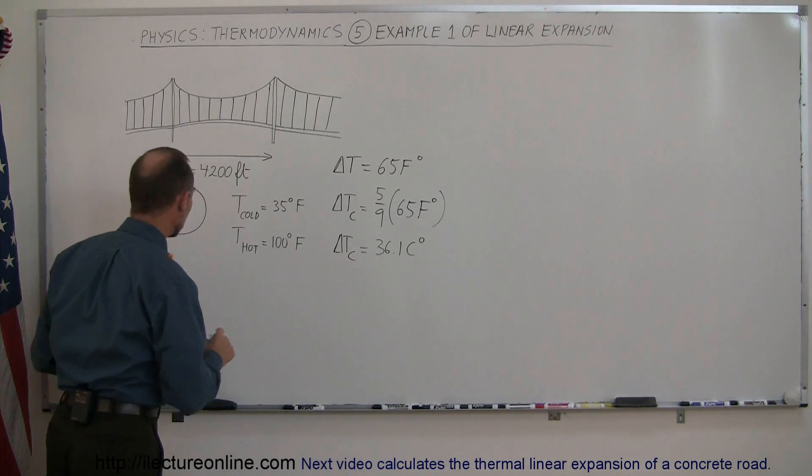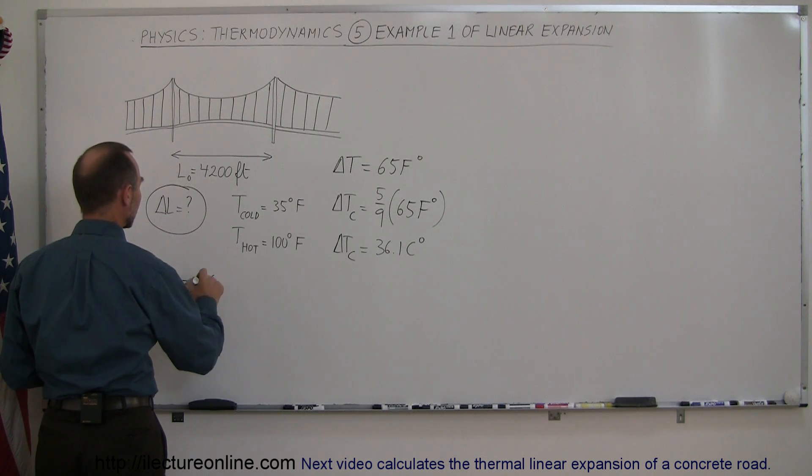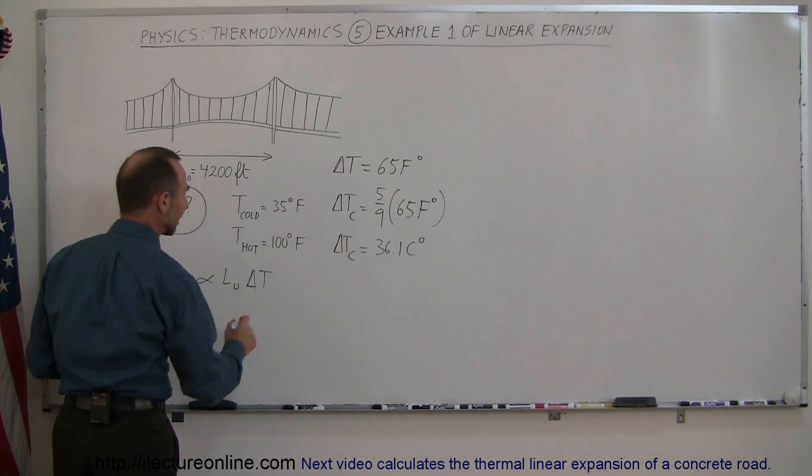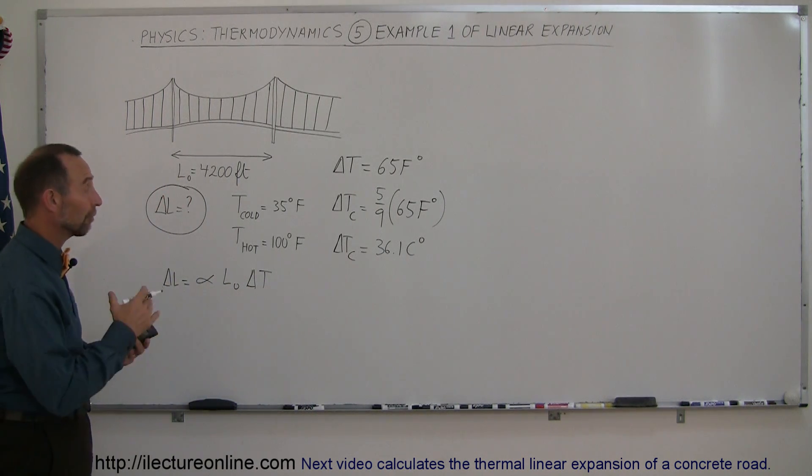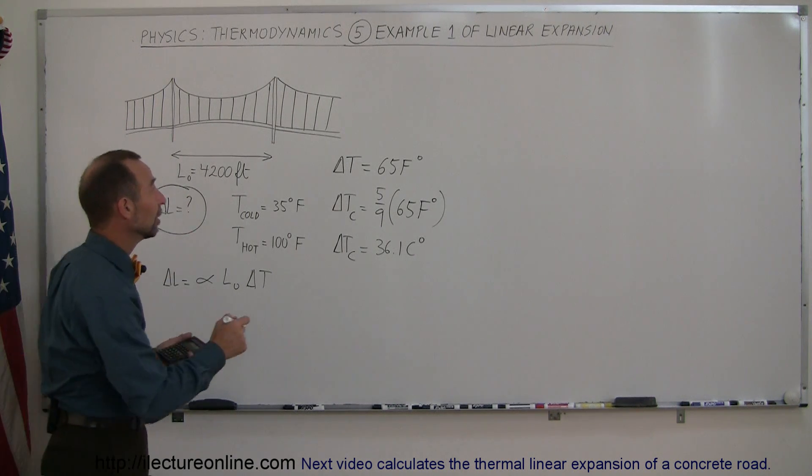Now, using the equation, the change in the length of the bridge is equal to the coefficient of linear expansion times the original length times the change in the temperature in centigrade degrees, because the coefficient of linear expansion is expressed in terms of centigrade degrees. And since that's made out of steel,